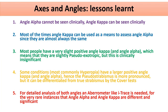To summarize: angle alpha cannot be seen clinically but angle kappa can. Most of the time, angle kappa can be used to assess angle alpha since they are almost always the same. Most people have a very slight positive angle kappa, meaning they are slightly pseudo-exotropic, but this is clinically insignificant. In some conditions like high hypermetropes, the larger positive angle kappa makes the pseudo-strabismus more pronounced, but it can be differentiated from true strabismus by cover tests. For rare instances where angle alpha and angle kappa are different and significant, an aberrometer like the Eye Trace is needed.